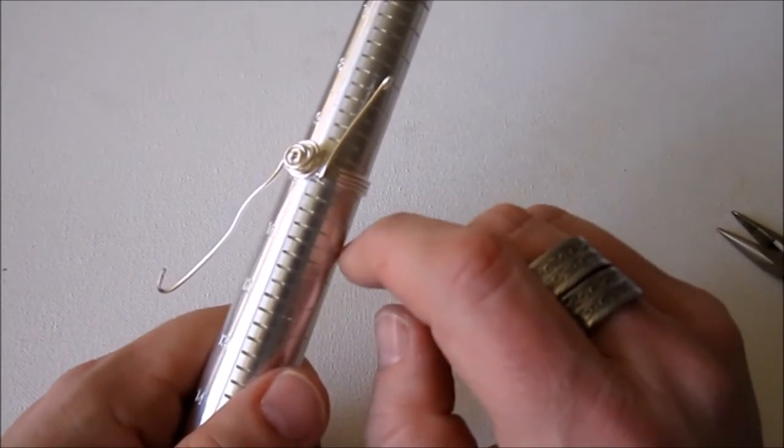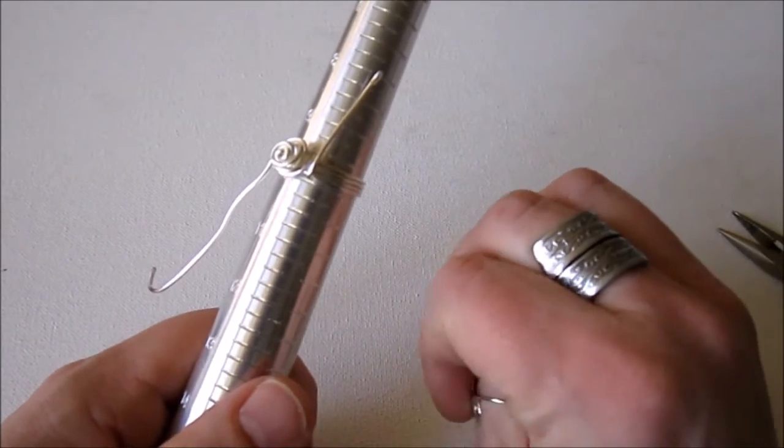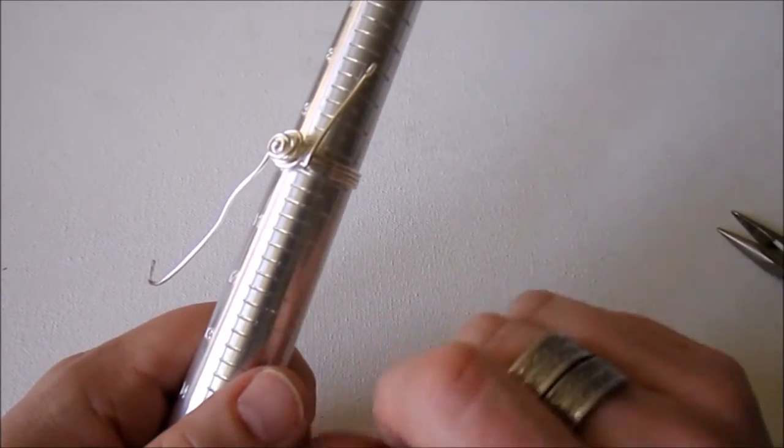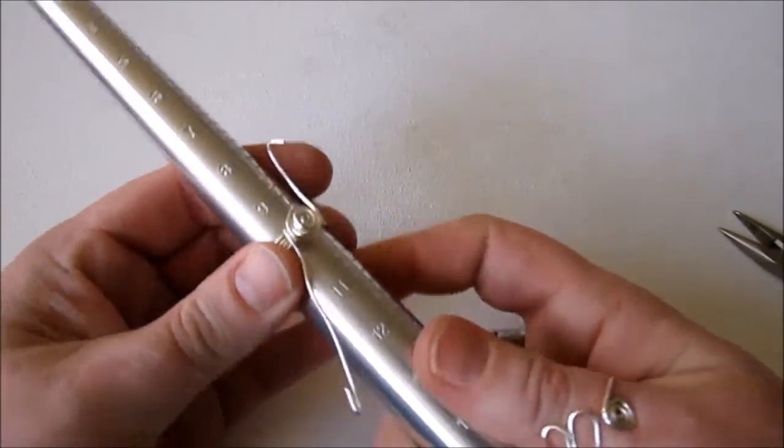So I'm making a size 10 ring. So if you're making a size 10 ring, you might want to have a little more than 18 inches of wire. But if you're making a smaller size, size 9 or something, then it would be perfect.